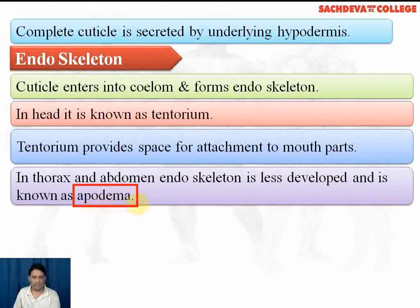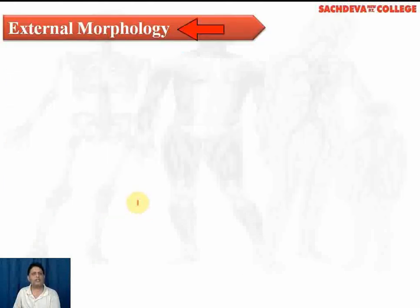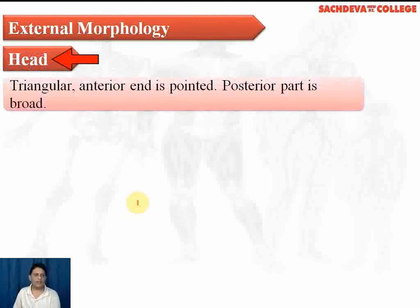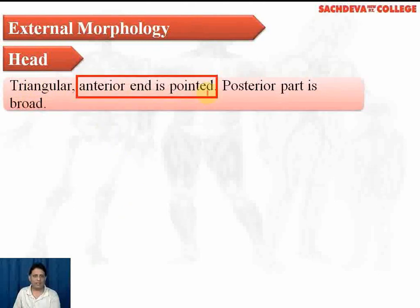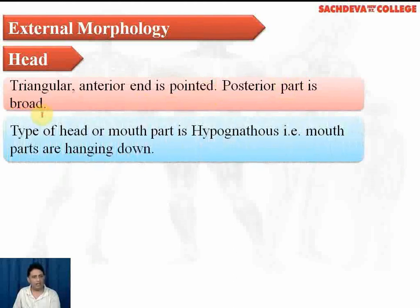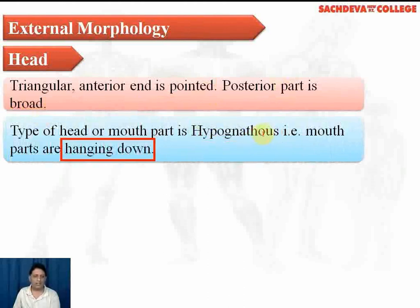In the thorax and abdomen, the endoskeleton is less developed and is known as apodemes. Coming to the external morphology of the cockroach: the body is divided into 3 parts — head, thorax, and abdomen. The head is triangular in shape; the anterior end is pointed and the posterior part is broad. The mouth parts are hypognathous, meaning they hang downward — the head is bent at 90 degrees.